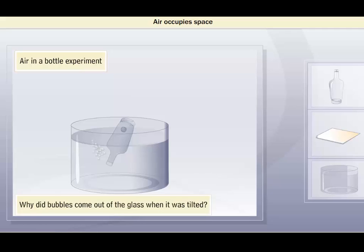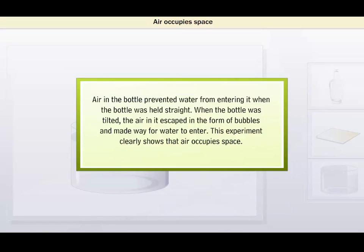Why did bubbles come out of the glass when it was tilted? What were the bubbles made of? Air in the bottle prevented water from entering it when the bottle was held straight. When the bottle was tilted, the air in it escaped in the form of bubbles and made way for water to enter. This experiment clearly shows that air occupies space.